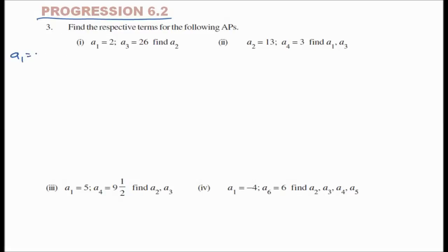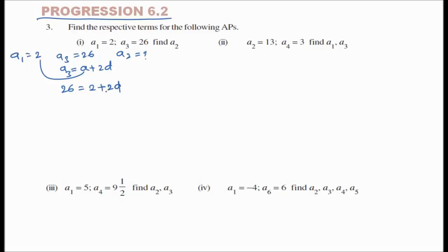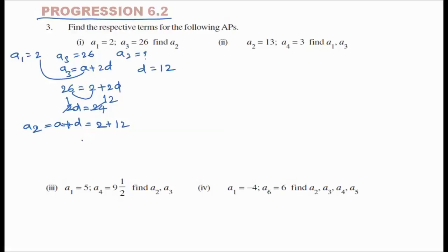Here a1 = 2 and a3 = 26; we have to find a2. Since a3 = a + 2d, substituting: 26 = 2 + 2d, so 2d = 24, giving d = 12. Therefore a2 = a + d = 2 + 12 = 14 is the answer.